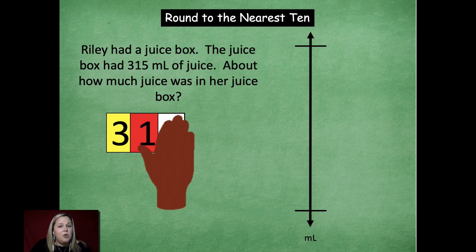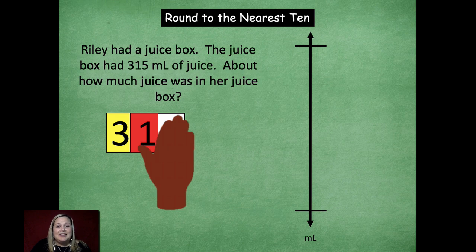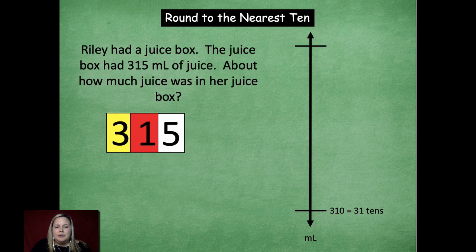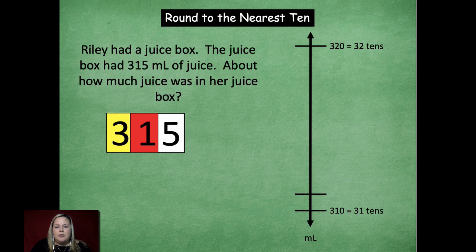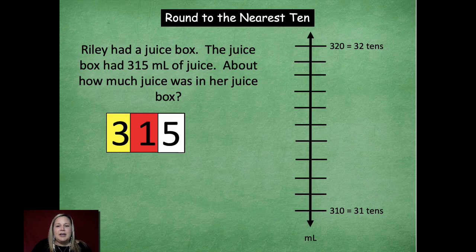Now, I'm going to cover up the ones place so I can see just how many tens there are. So there's thirty one tens, which is also three hundred ten. Now, I just have to go up one more ten to get thirty two tens. Okay? Now, we're going to go in and we're going to put in our lines to represent our number line. So from three hundred ten to three hundred twenty, you have a total of ten lines.